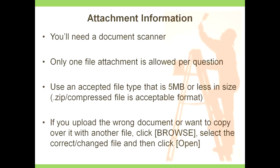All supporting documentation must be electronically uploaded to the application questionnaire. You'll need a document scanner to create some of these files — if you don't have a scanner at your facility, consider obtaining a loaner machine or taking documents to an office or copy store. Only one file attachment is allowed per question, and you must use an accepted file type that is 5 megabytes or less. Since zip or compressed files are an acceptable format, you may need to zip certain documents together and upload them to one question. If you need to replace an incorrect file, simply repeat the upload process — this erases the old document and replaces it with the new one.